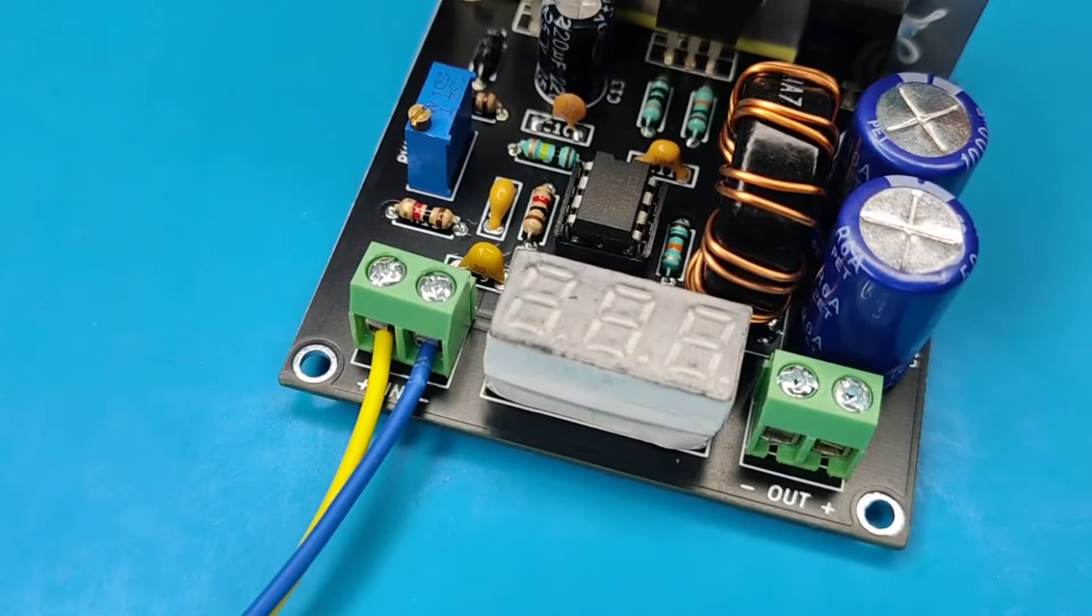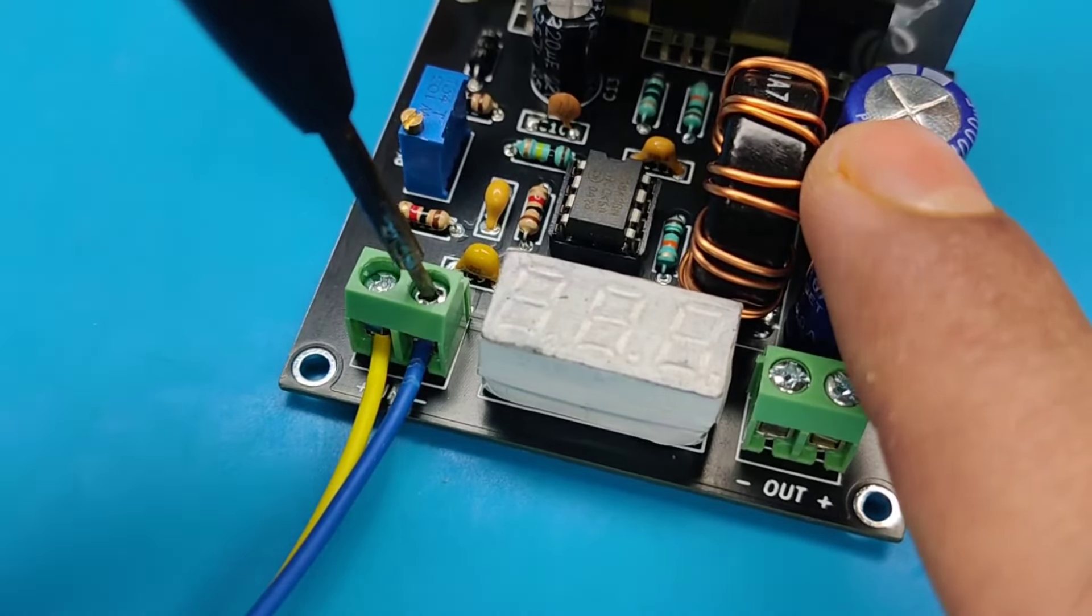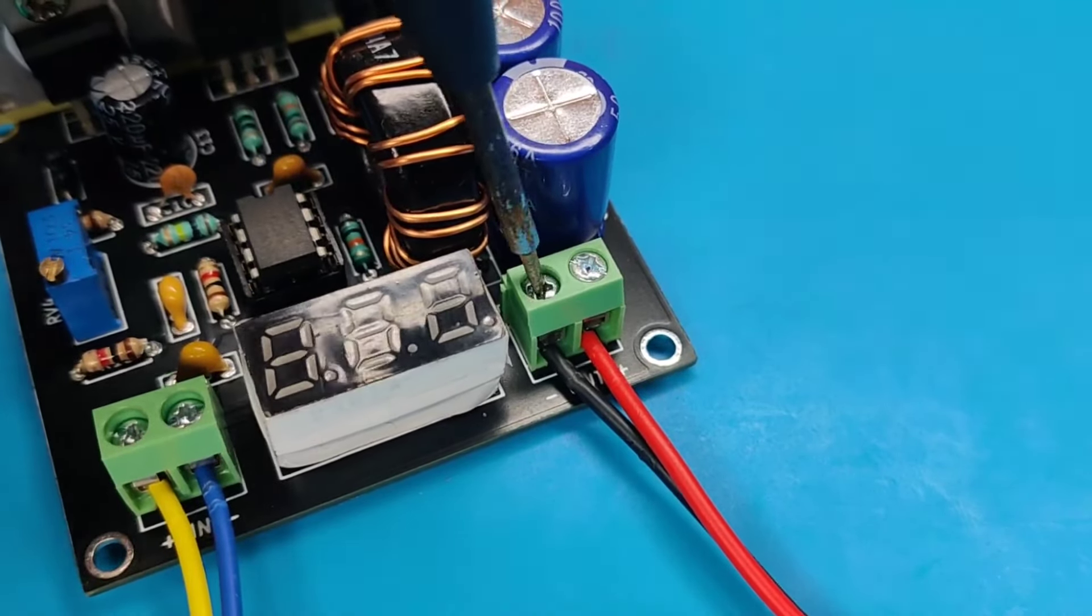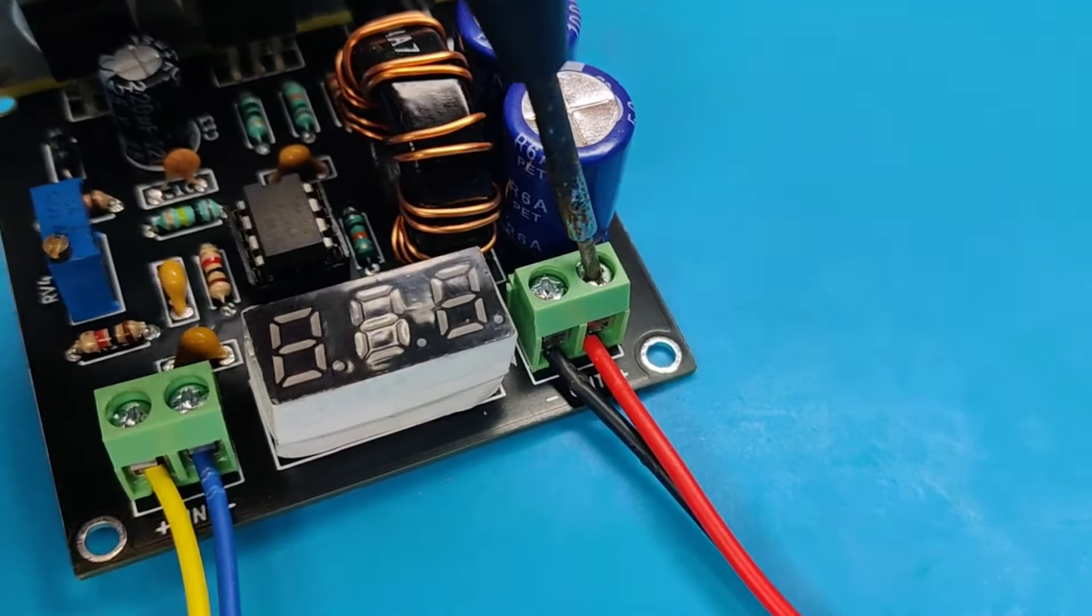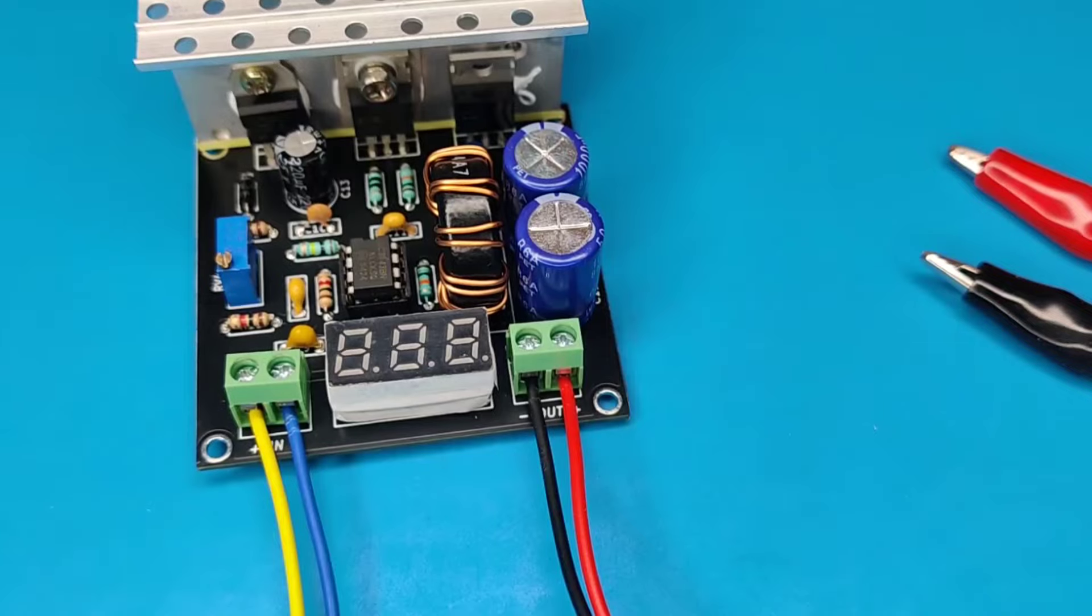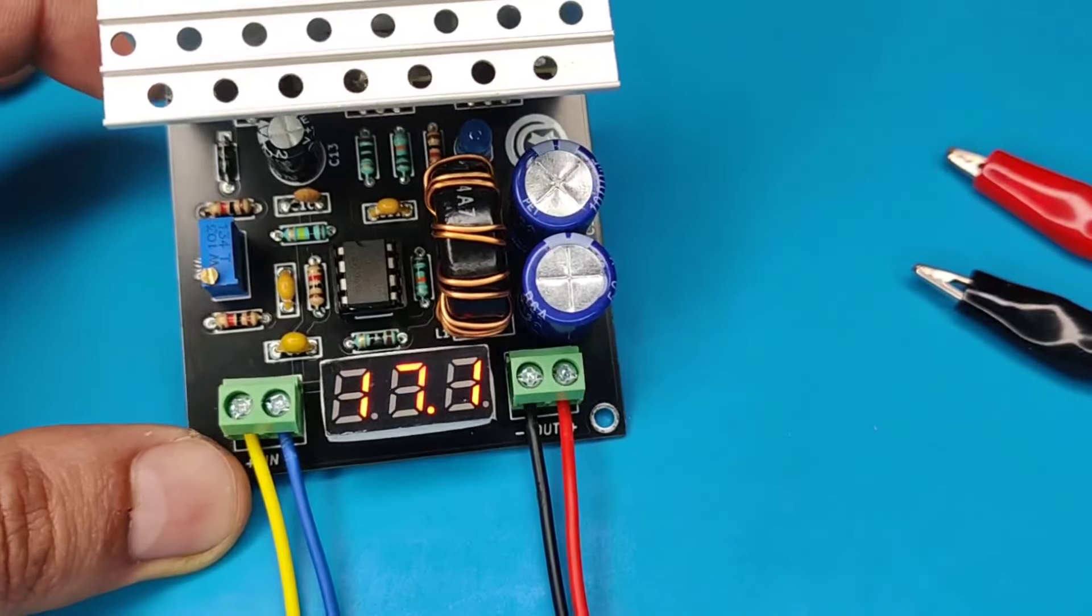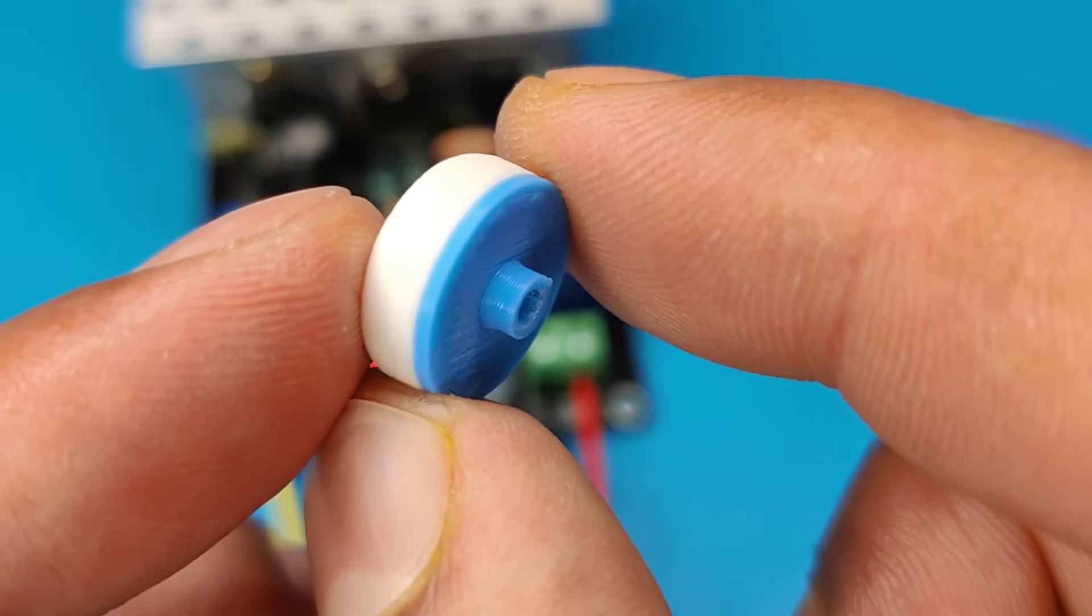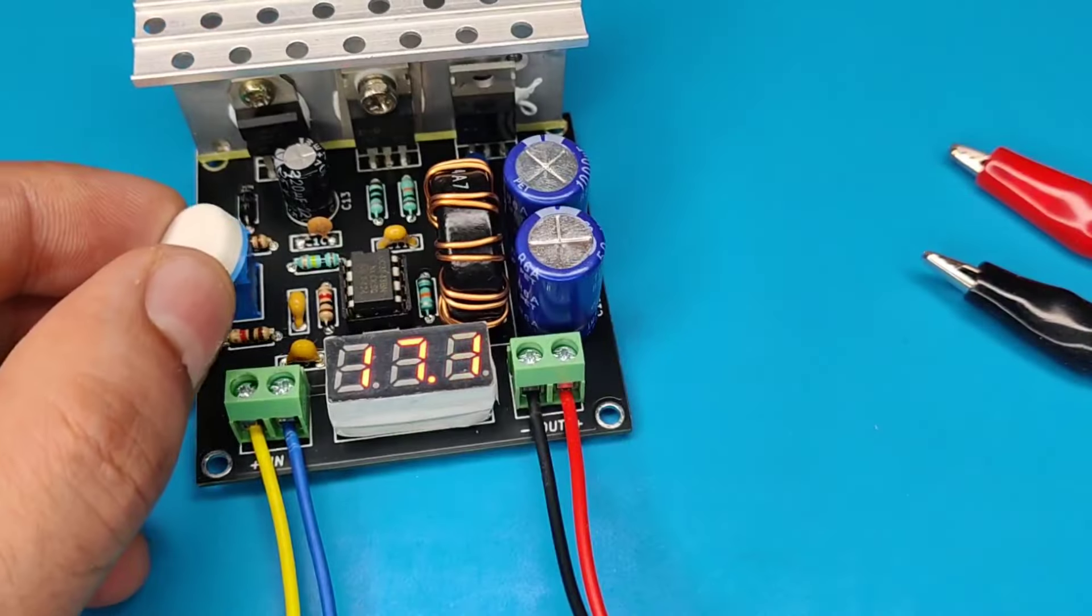Insert the input and output wires in connectors. Connect the 12-volt DC power source at input, and the output voltage can be seen on display. I 3D printed the knob for potentiometer, so the voltage can be adjusted easily.